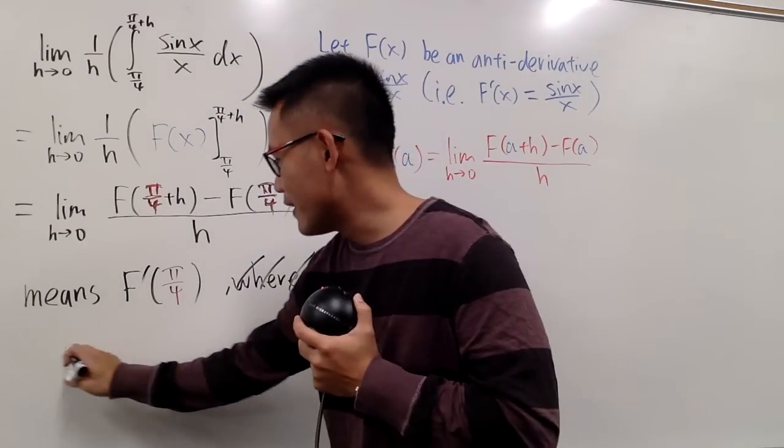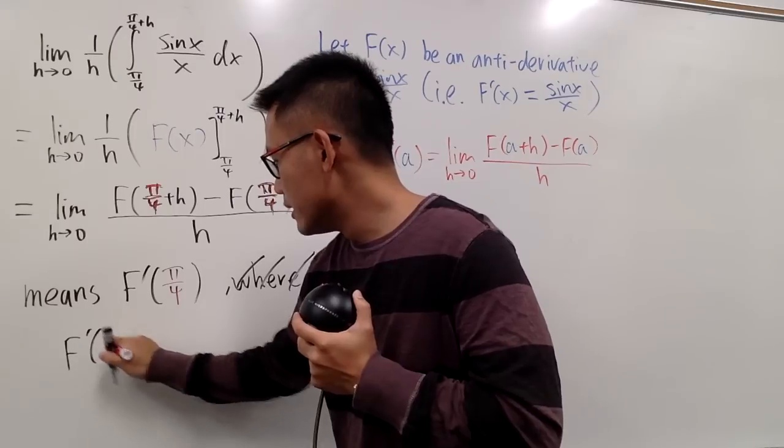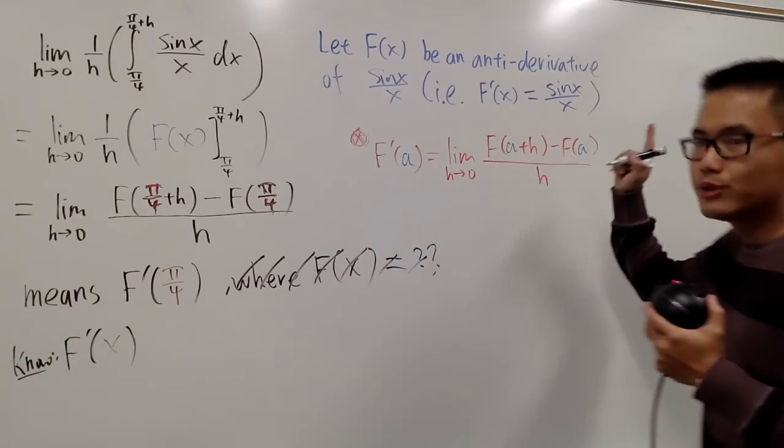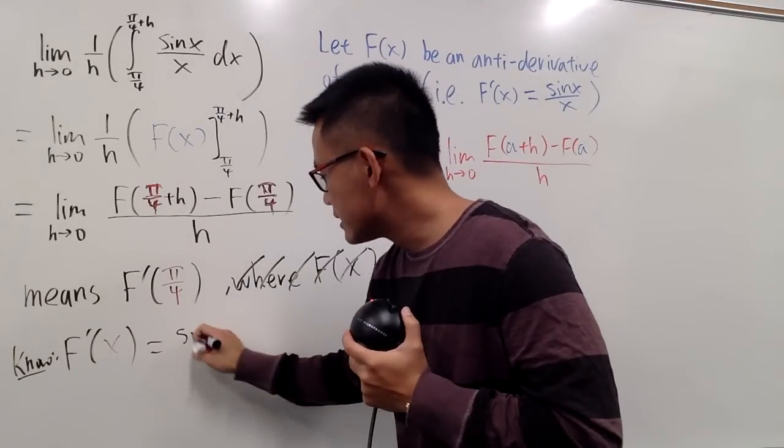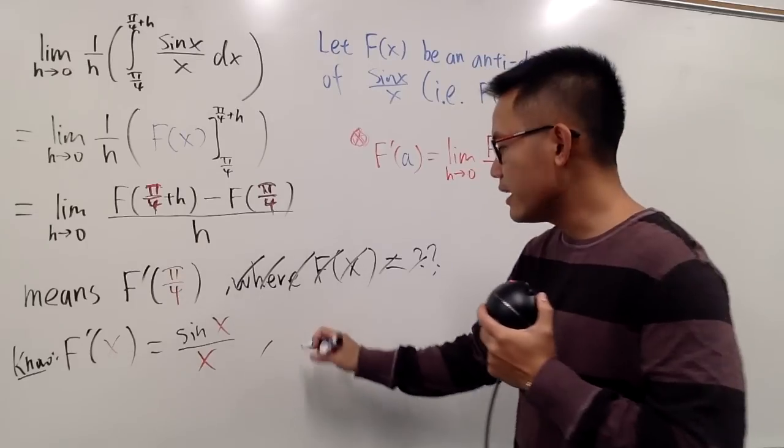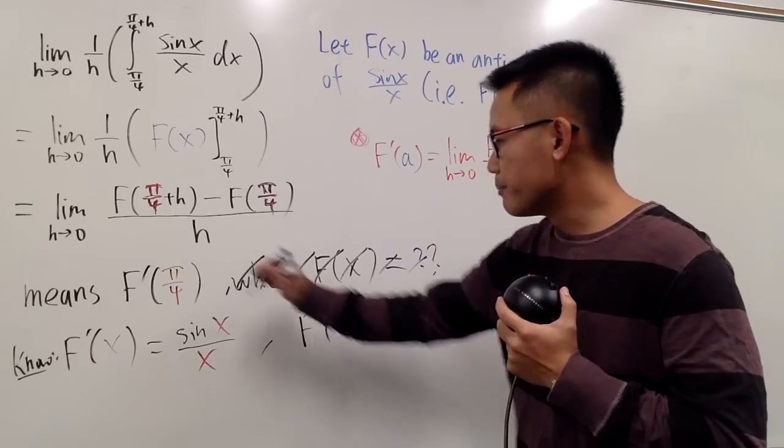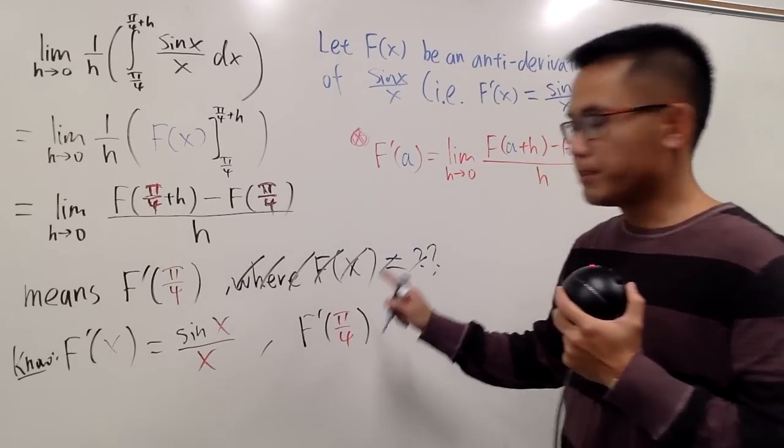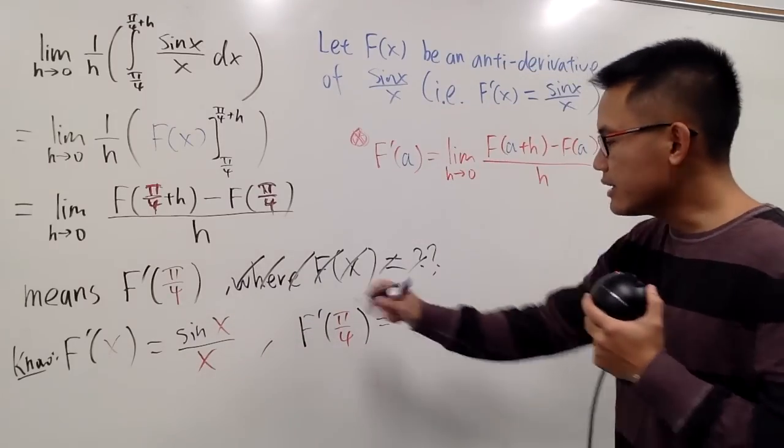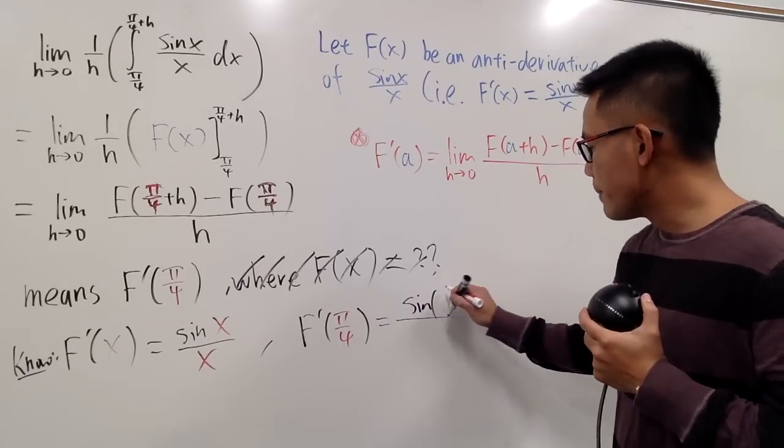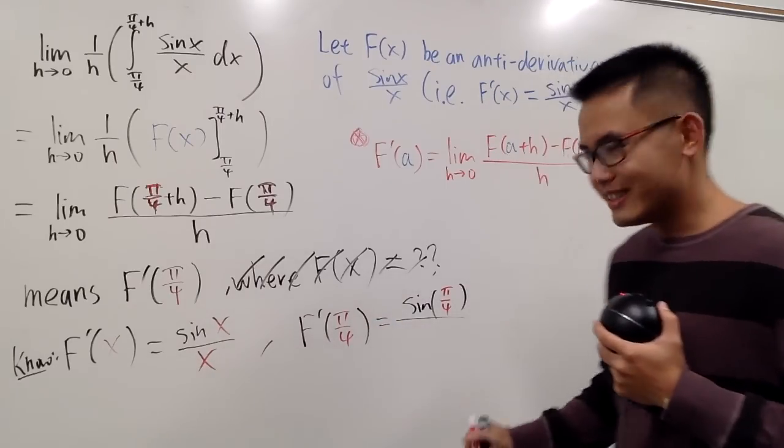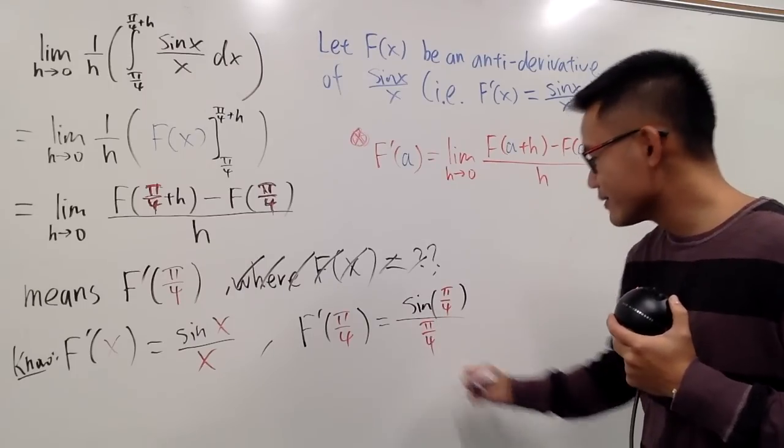But I don't really need to worry about this part, because it says F'(x) will be sin(x)/x. So I know F'(x), by what I told you guys right here already, this has to be sin(x)/x. So of course, I can say F'(π/4), all we have to do is plug in π/4 into this x. So this is equal to sin(π/4) over π/4. We'll just write this down nicely, π/4.